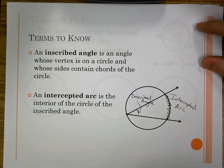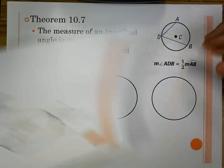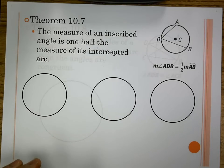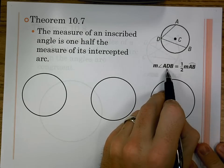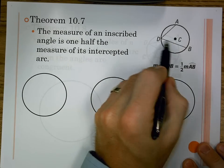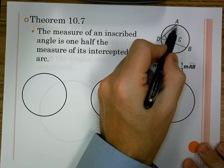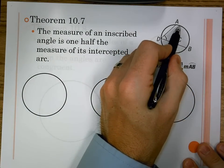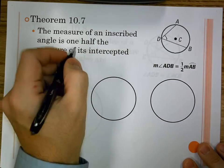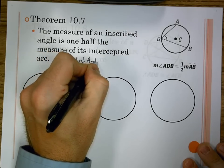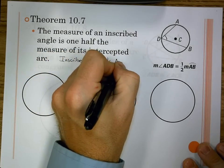Just as we looked at values with a central angle, we do the same with an inscribed angle. Theorem 10.7 tells us the measure of an inscribed angle is one half the measure of its intercepted arc. So angle ADB equals one half the measure of arc AB. Let's shorten it: the inscribed angle equals one half the arc.